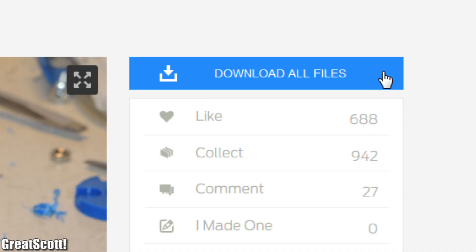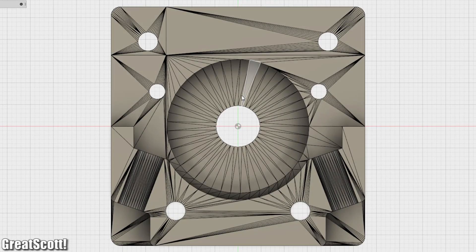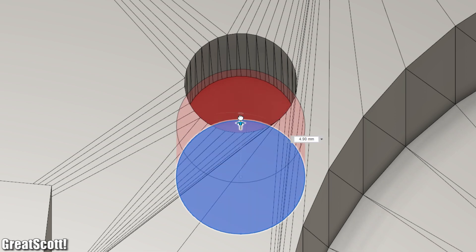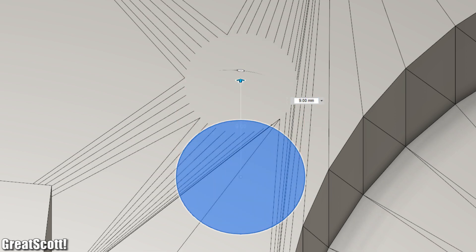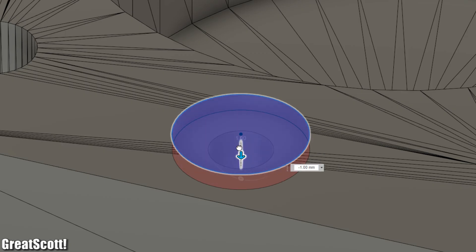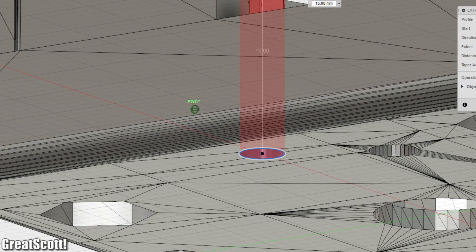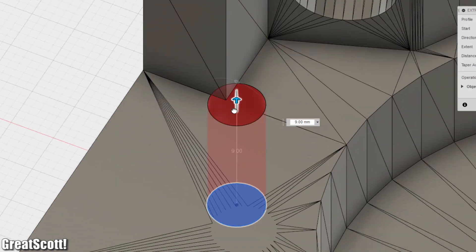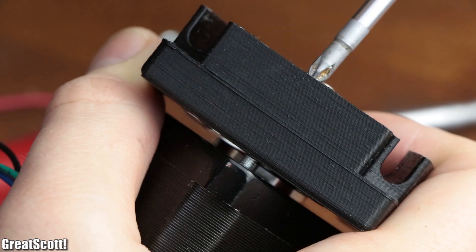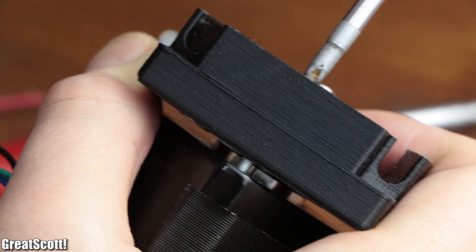So I downloaded his model files, imported them into Fusion 360, closed the mounting holes for the smaller stepper motor, and created new ones with indentations for the NEMA 17. Sadly though I could not create all four of them since that would have messed up Rolf's model, but I think two mounting holes will also be sufficient.